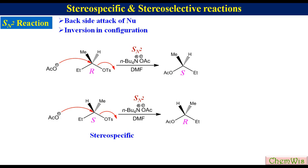If we view in terms of stereoselectivity, there are two stereoisomers — two enantiomers — of the product. In both reactions, one is selectively formed. So this is also an example of a stereoselective reaction.